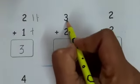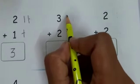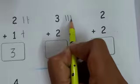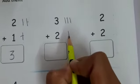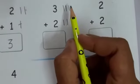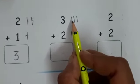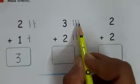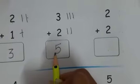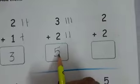This is number 3. Start drawing lines with counting numbers: 1, 2, 3. Still have 2 more lines: 1, 2. So how many total lines are there? Count it: 1, 2, 3, 4, 5. How many? 5. So write here number 5. Three plus two is equal to 5.